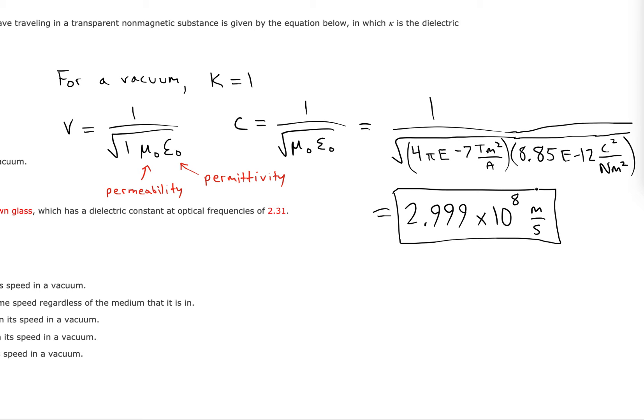Now of course, we're rounding here with these constants. I've only got 3 sig figs in one of them. So you could really say it's about 3 times 10 to the eighth meters per second.